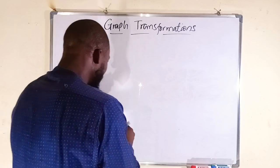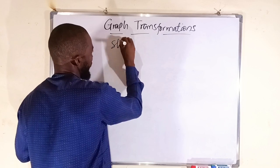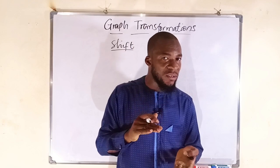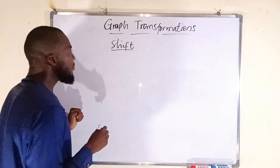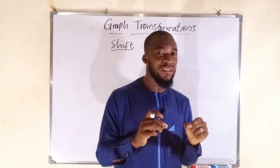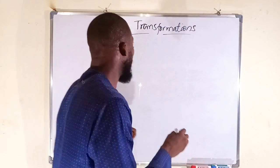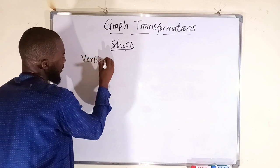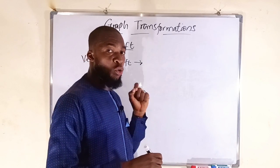We have what we call a shift. A shift can take place along the y-axis or the x-axis. If the effect is on the y-axis — that is, on the y-coordinates — the graph will be shifted either upward or downward. That is what we call a vertical shift, and a vertical shift is an effect on y-coordinates.